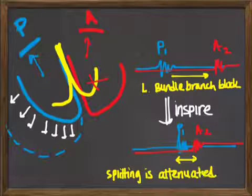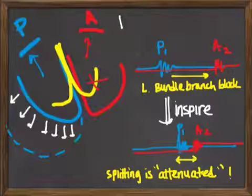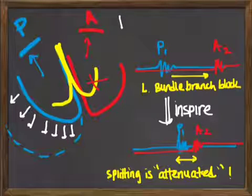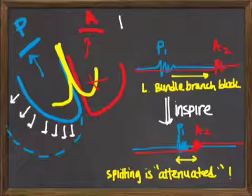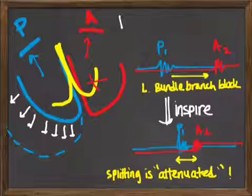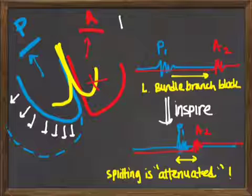When you inspire, you increase the volume in the right ventricle, and you're going to delay the pulmonic valve closing. And what it does, if the person has left bundle branch block, it actually attenuates the splitting that's naturally caused by the left bundle branch block. To diagnose this, you have to listen to the heart sound without them breathing in to hear the splitting. And then if you tell them to breathe in and the splitting disappears, then that is evidence for left bundle branch block.